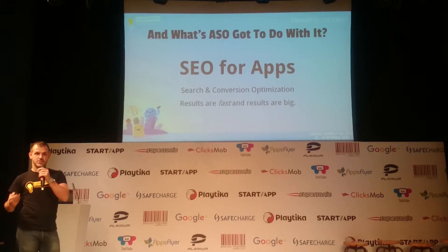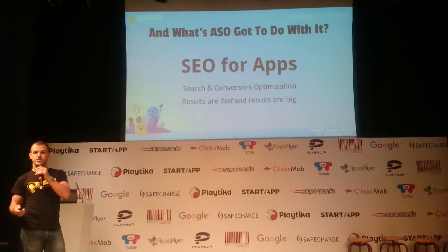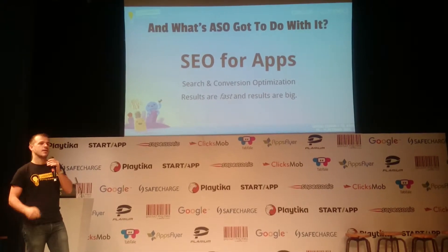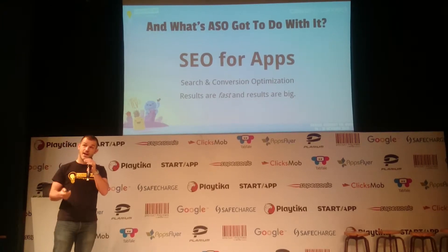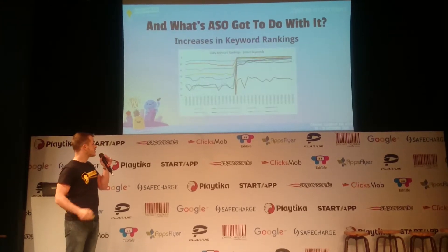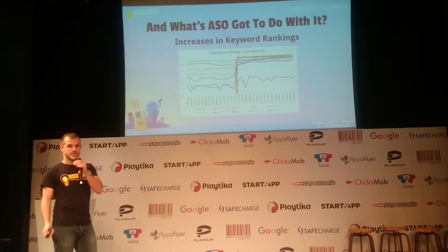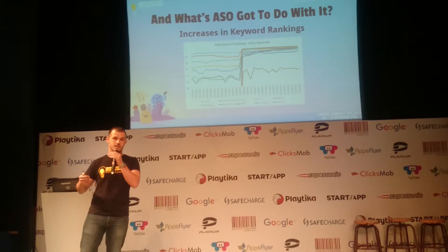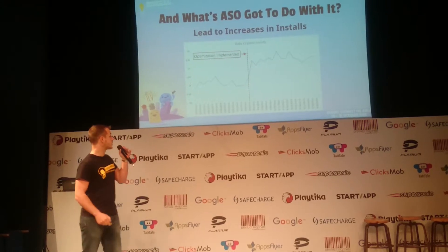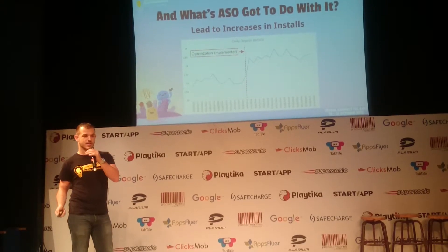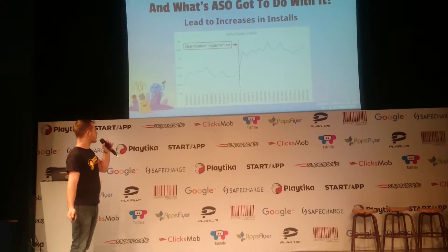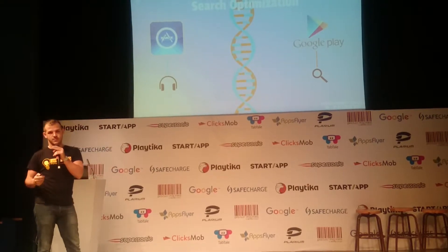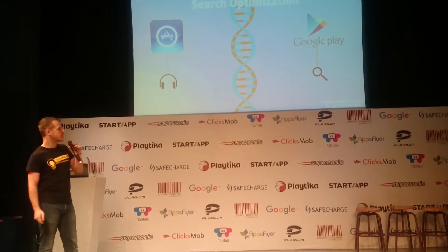ASO is about search optimization — making sure your application gets found — and conversion optimization — making sure that once people find your application, they actually want to install it. Unlike SEO, results are fast and dramatic. Changes in text lead to almost instant changes in keyword rankings, which coupled with increases in conversion rate lead to very quick gains in installs. I'm going to jump right into search optimization, covering both Google Play and iOS, since those are obviously still the two most dominant stores.